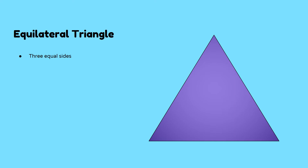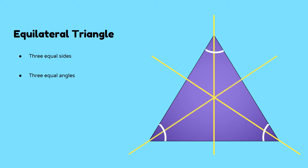Let's start with the equilateral triangle. As the name suggests, its three sides are equal. Since its three sides are equal, then its interior angles must also be equal. How many lines of symmetry did you find? It has a line of symmetry at each vertex — one here, one here, and one there. You can fold the equilateral triangle at any of these lines and get a perfect mirror. Thus, it has three lines of symmetry. Therefore, an equilateral triangle is a three-sided figure whose sides are equal, angles are equal, and it has three lines of symmetry.